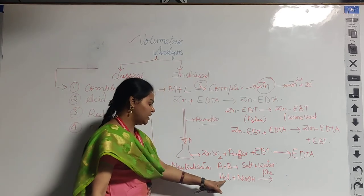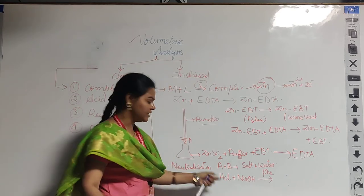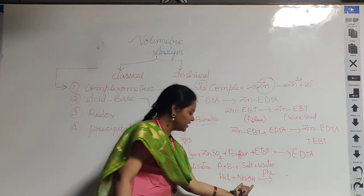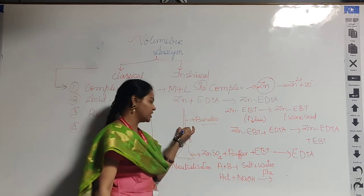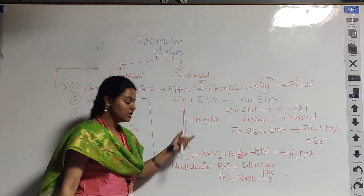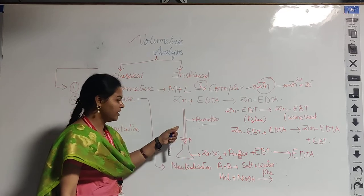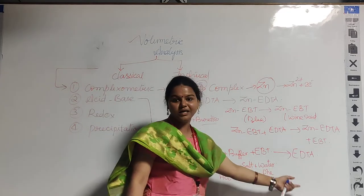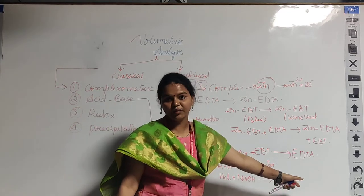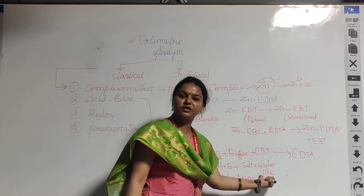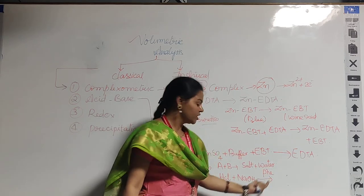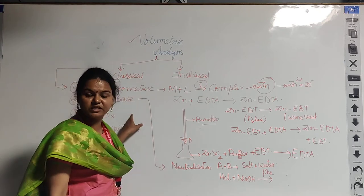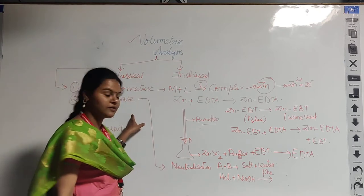For example, we take HCl as a strong acid in the conical flask and a strong base in the burette. The acid is titrated against the base solution, and phenolphthalein is used as the indicator, giving a colour change at the endpoint. This is one example of acid-base titrations.